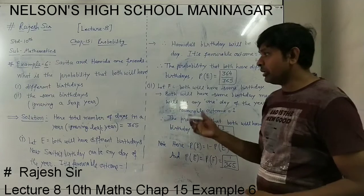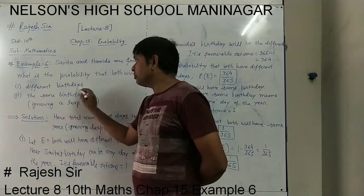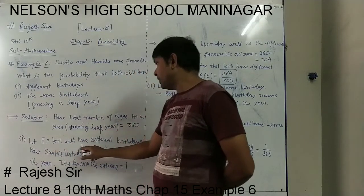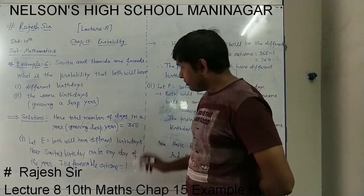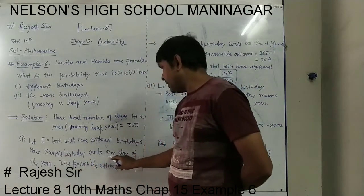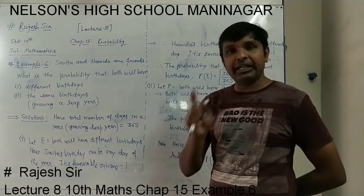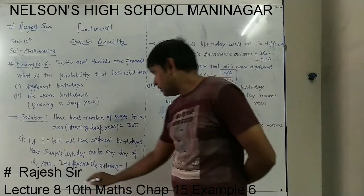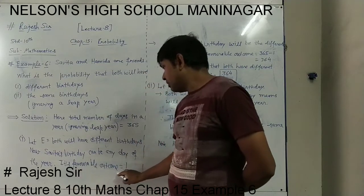Now, as we want to find out the first question — different birthdays — let E denote that both will have different birthdays. Different birthdays means Savita's birthday can be any one day of the 365 days of the year. So Savita's birthday's favorable outcome is 1.